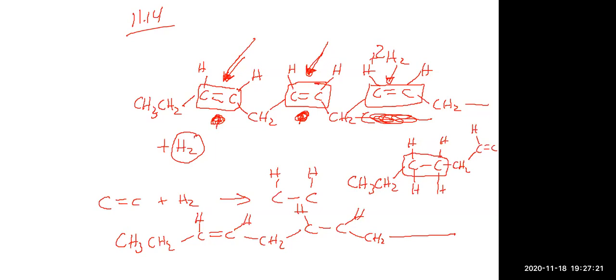And if you wanted to take all of them out at once, like part B of the question, you would need three H2s — one for here, one for here, and one for here as well. So that would take out all three of them.